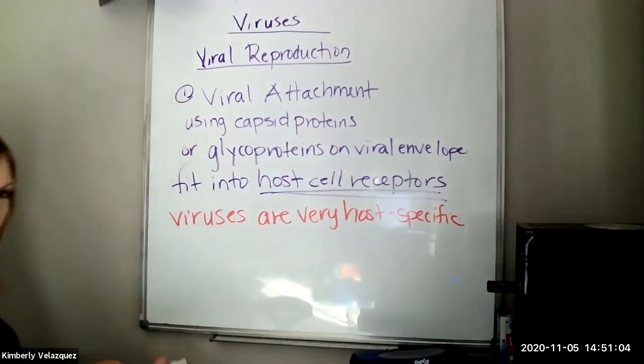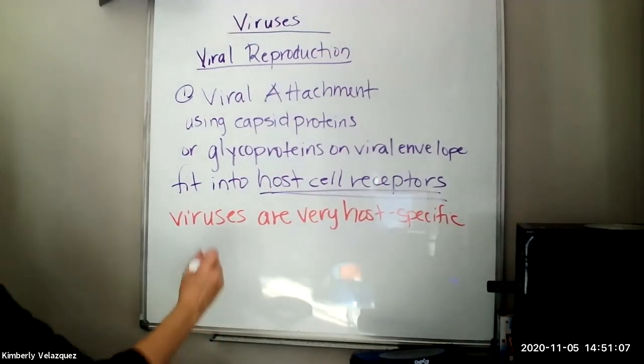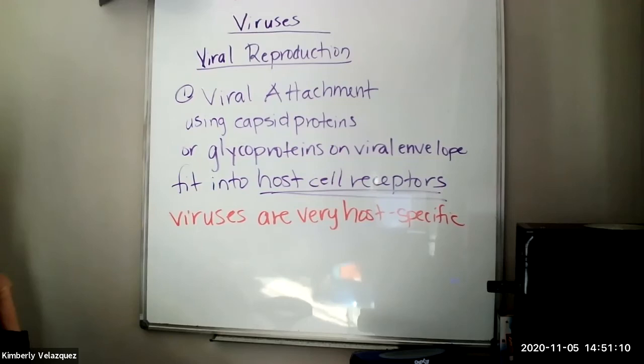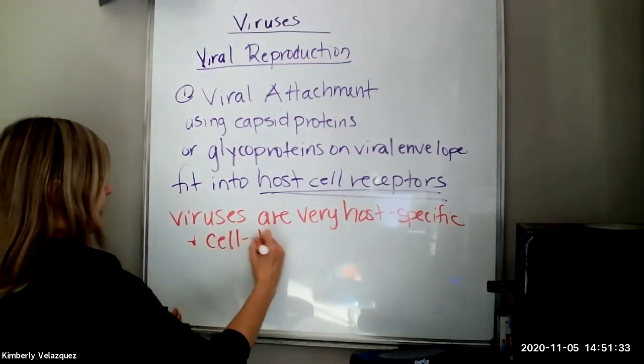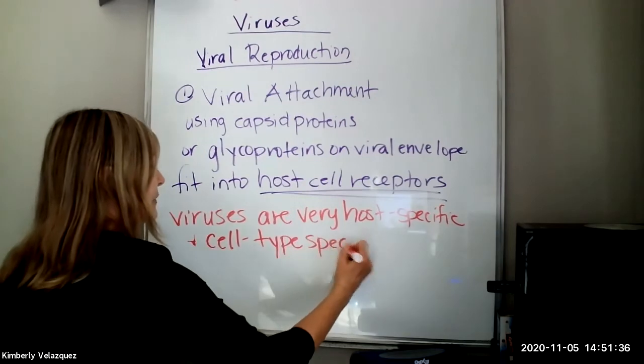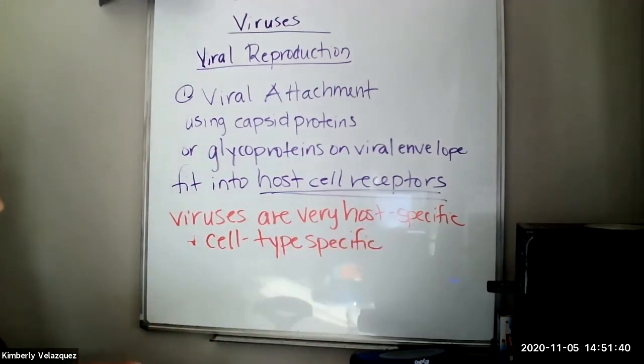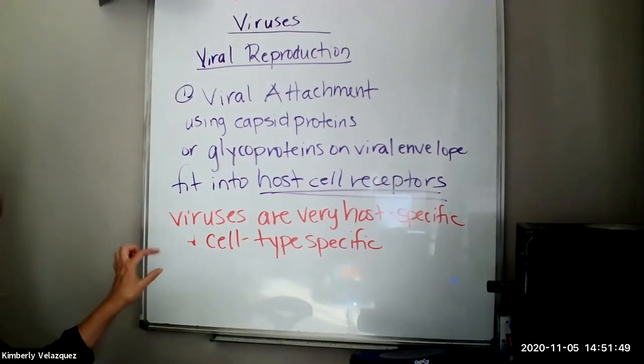This is why viruses are very host specific and cell type specific. Because the lock is a little bit different on everyone's cells. So host specific, you can't get your dog sick. Your dog can't get you sick without some type of mutation happening to that virus to allow it to now infect the different species of organism. And that's because the receptors on the cell surface are shaped a little differently in every species of organism. Unless they're very closely related in some cases. And they're also very cell type specific. Different cell types have different types of receptors so they can do their cell job. So the cells of your intestine have different receptors than cells in your lungs, for example.